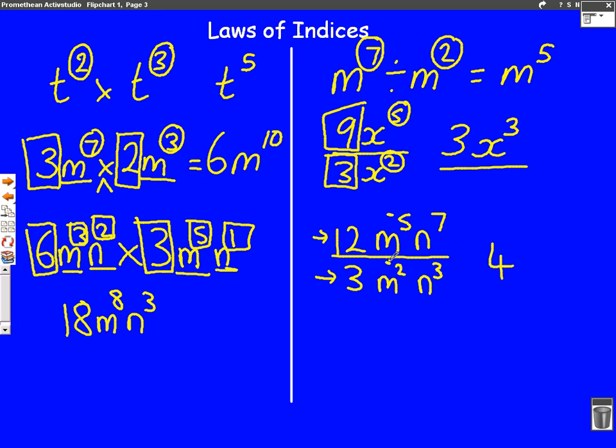Now do the n's. Power is seven, power is three. Take them away: seven take away three is four, so it's n to the four. So there's your answer.